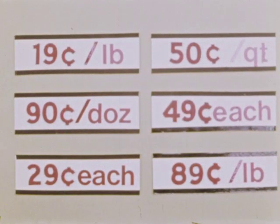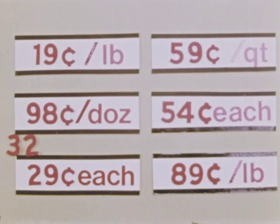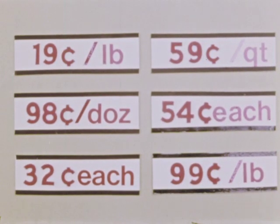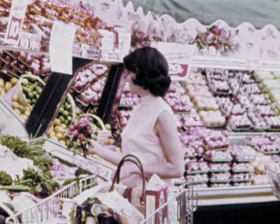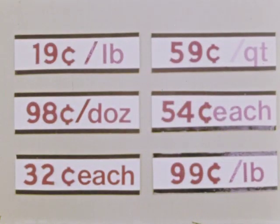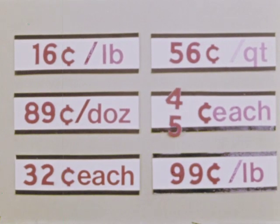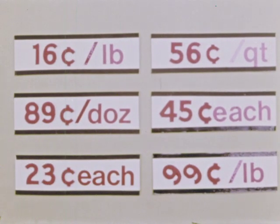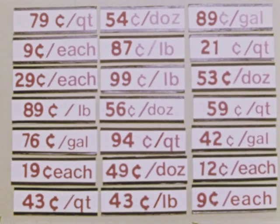Changing prices change the value of a dollar. If prices of items go up, the value of a dollar spent for these items goes down. Of course, the opposite is also true. What happens if prices go down? The value of each dollar spent for these items goes up with the decrease in prices. A dollar will buy more of each item if the prices keep going down.